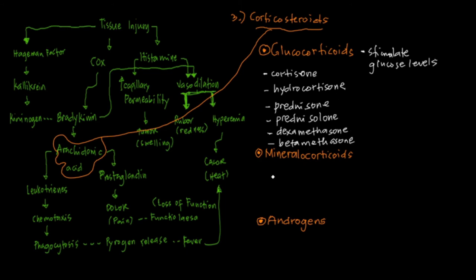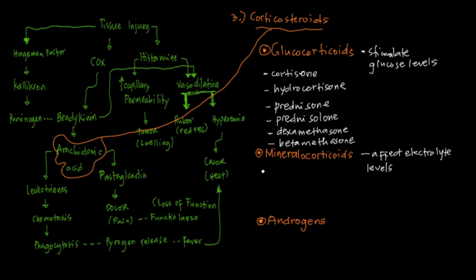Mineralocorticoids are so named because they affect electrolyte levels. Common examples of mineralocorticoids include fludrocortisone, and the classic example is aldosterone.